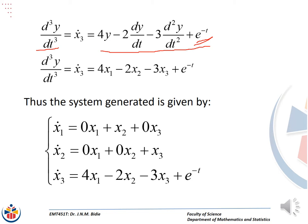The next thing to do is to substitute our change of variables. We had let y be equal to x1, dy/dt be equal to x2, and the second derivative of y with respect to time equal to x3, and we take down the input function. So therefore now we have x3_dot equal to 4x1 minus 2x2 minus 3x3 plus e to the power negative t.